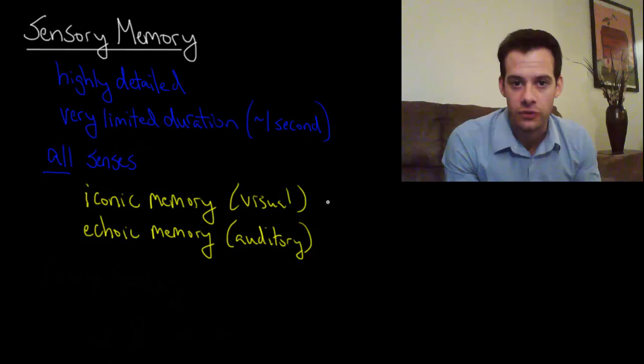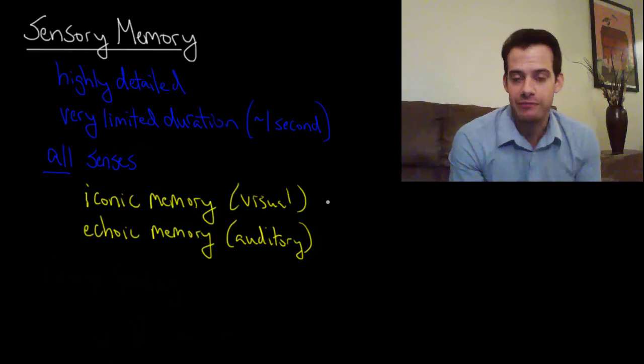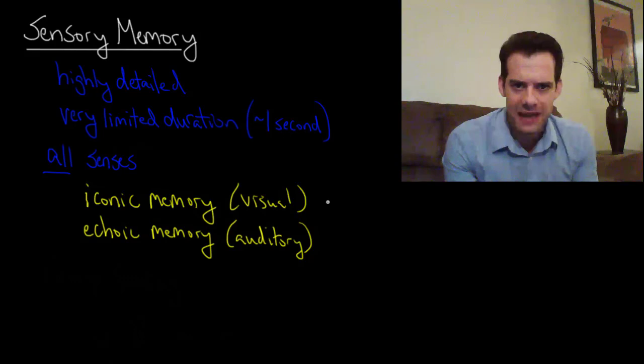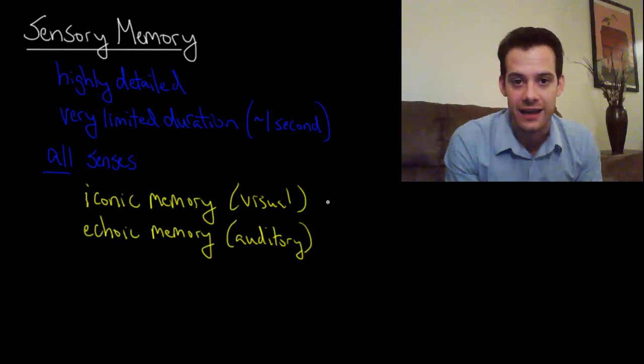The information isn't there. It's not locked away in your mind somewhere. It's simply gone. It was in your sensory memory for about a second and then it was essentially discarded. Now this makes sense because most of the information that's coming in is irrelevant. It doesn't matter to you. You don't need to recall it. There's no reason for your mind to keep track of all of this minutiae and detail of everything you've ever seen or everything you've ever heard.